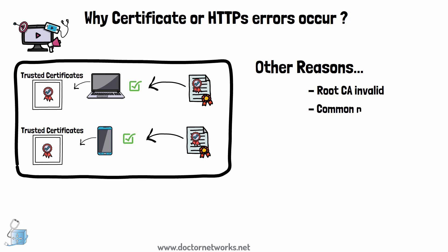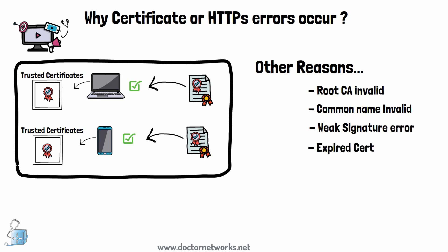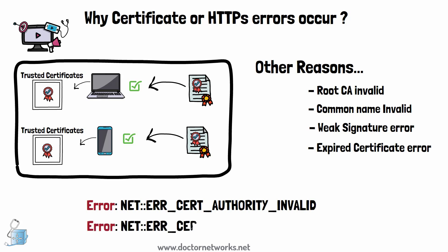There are many reasons you might get an HTTPS or certificate error: root CA invalid, which we just discussed; common name invalid, caused by a mismatch in domain names; weak signature error, caused by weak algorithms — for example, using SHA-1 instead of SHA-2; and expired certificate errors. Our main focus in this lab will be on the root certificate issue alongside the common name problem.